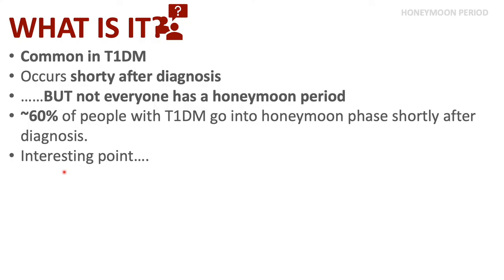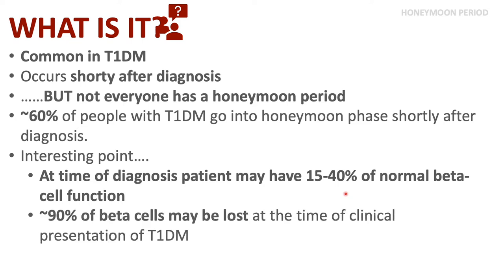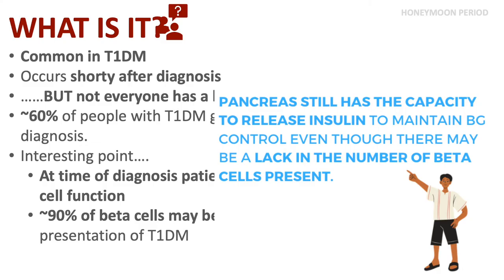An interesting point is that at the time of diagnosis, a patient may have 15 to 40 percent of normal beta cell function remaining, and furthermore up to 90 percent of beta cells may be lost at the time of clinical presentation of type 1 diabetes. So it is remarkable that the pancreas still has the capacity to release insulin to maintain blood glucose levels even with so few beta cells present.